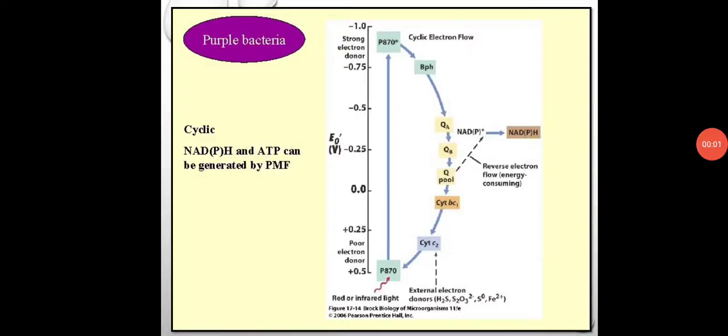In the last lecture, we started our anoxygenic photosynthesis mechanism in purple bacteria. We already discussed how the electrons flow from the reaction center P870, and it is a cyclic process.